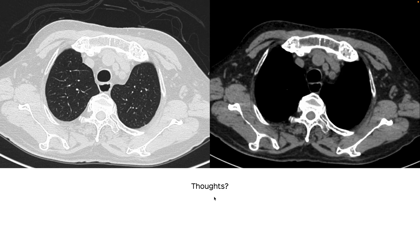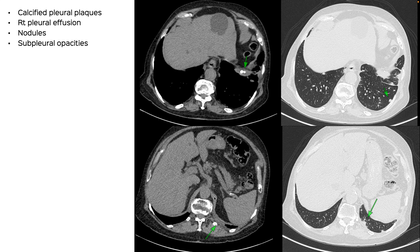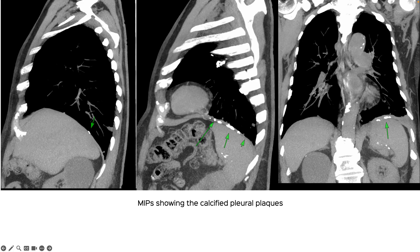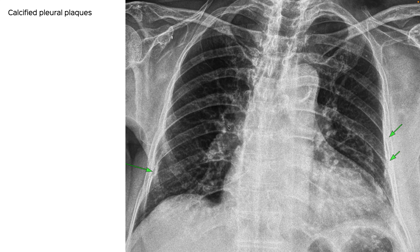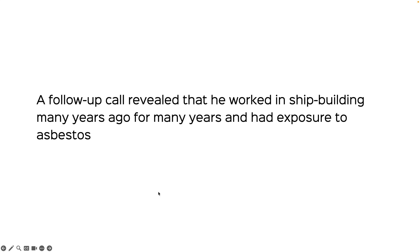What we have are calcified pleural plaques, lung nodules, some sub-pleural opacities, and a right pleural effusion. The key finding to pick up is the pleural plaques, which are bilateral and seen extremely well here. We need to find the cause — these kinds of pleural plaques can occur because of old infection, trauma, or the classic asbestos exposure, and you can see them on the radiograph as well.